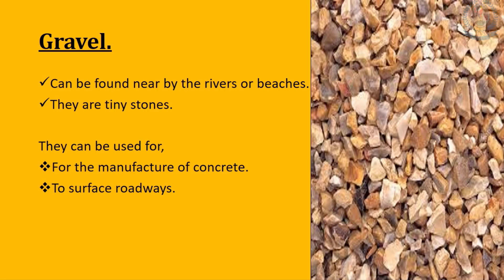The next type is gravel. In this picture you can see some gravel. Gravel can be found nearby rivers or the beach. They are tiny stones. Gravel can be used for the manufacture of concrete and to surface roadways.